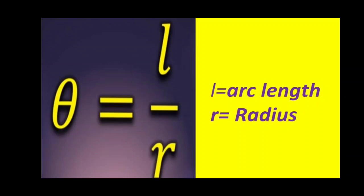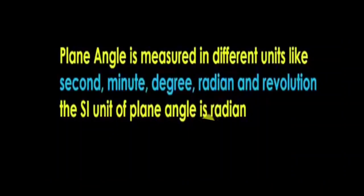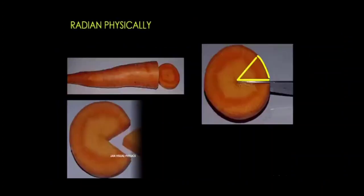The SI unit of arc length is meter and the SI unit of radius is also meter. So both meters get cancelled and it becomes a dimensionless quantity. Even though it is dimensionless, plane angle is measured in different units like second, minute, degree, radian and revolution. The SI unit of plane angle is radian, abbreviated as RAD.